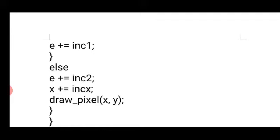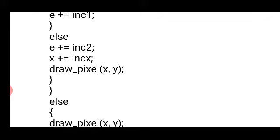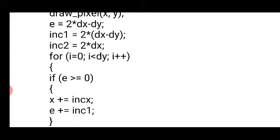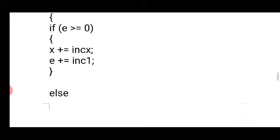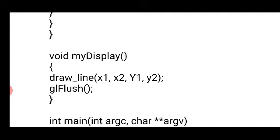Then x is updated as x = x + increment_x, which is either plus 1 or minus 1. Finally, we draw that pixel onto the screen using drawPixel. These steps are repeated delta_x times, and the complete line is drawn by the drawLine function.